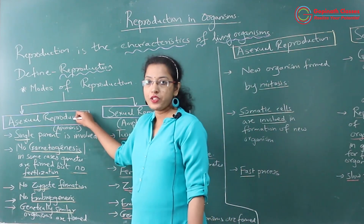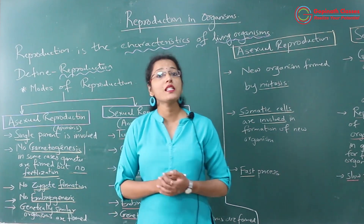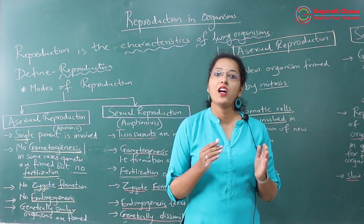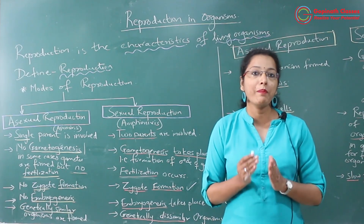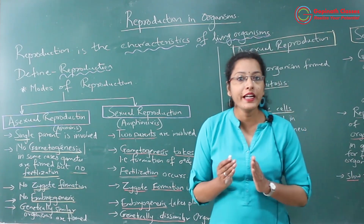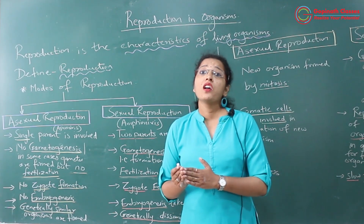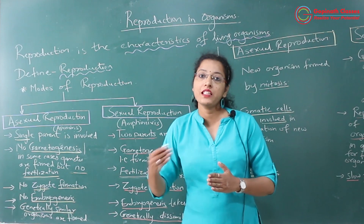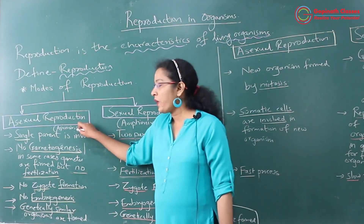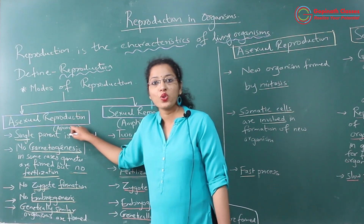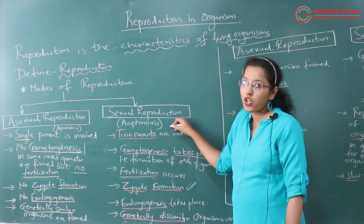Asexual reproduction is also known as apomixis. Why is it known as apomixis? Because in asexual reproduction there is no formation of gametes — only a single parent is involved in asexual reproduction, which does not give rise to genetically dissimilar organisms. That is why asexual reproduction is also known as apomixis.